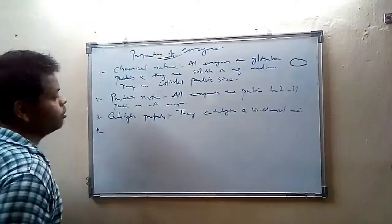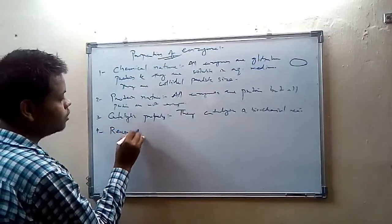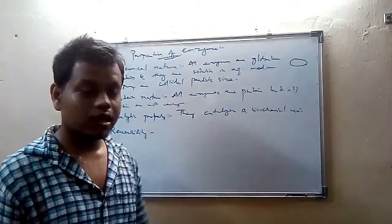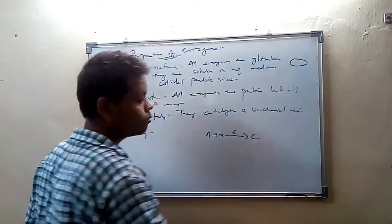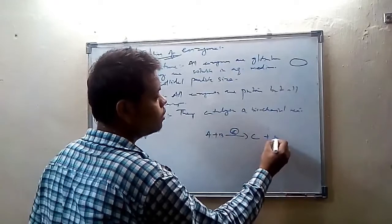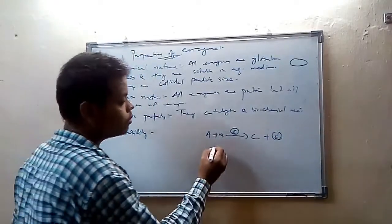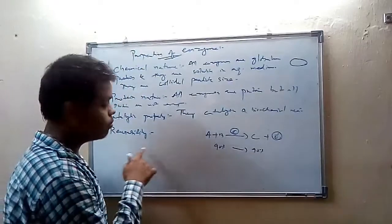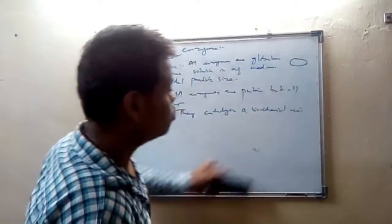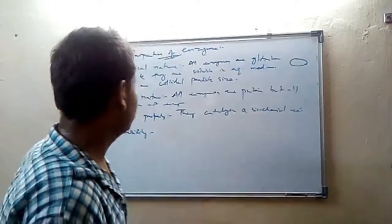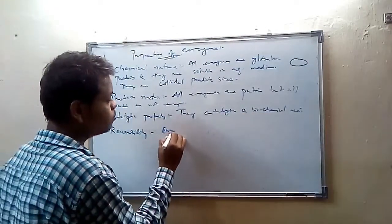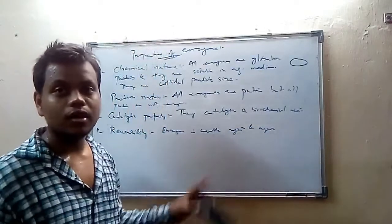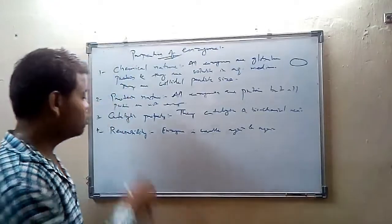The next property is their re-usability. Re-usability means after the biochemical reaction, we get as much enzyme as we provided earlier — the enzyme is undisturbed. If we provide 90% enzyme, then we will get 90% enzyme after the biochemical reaction. We can use this enzyme in the next biochemical reaction also. This is called the re-usability property of enzyme.